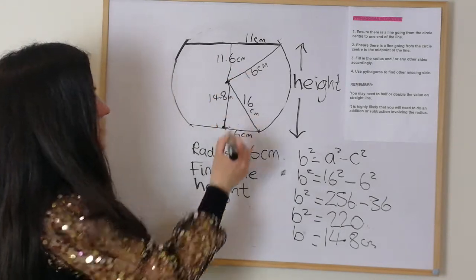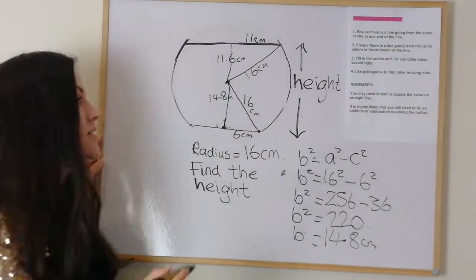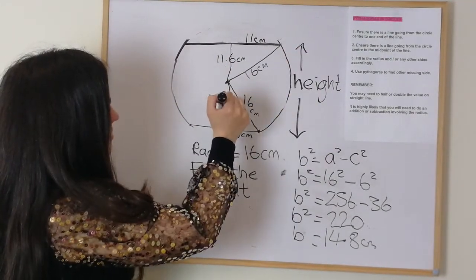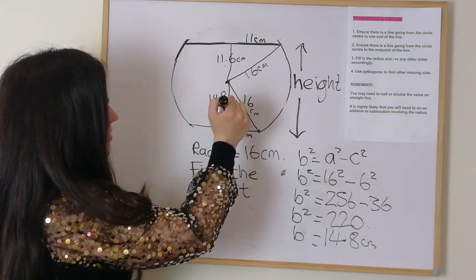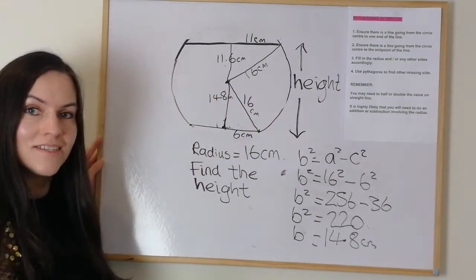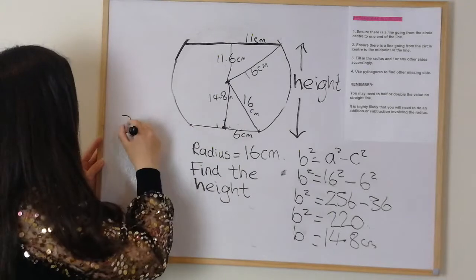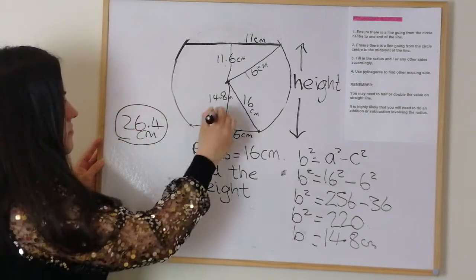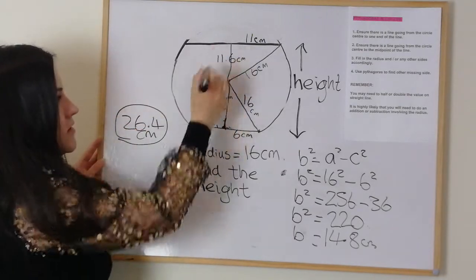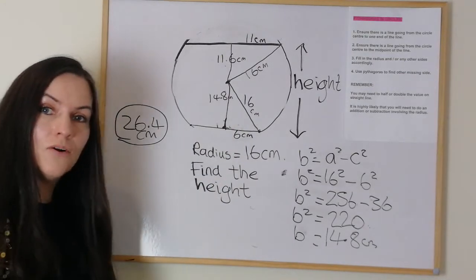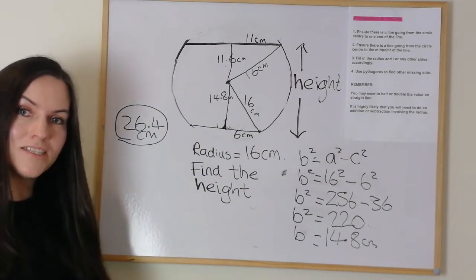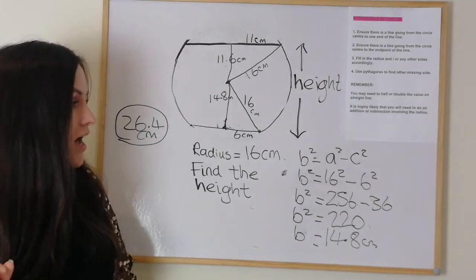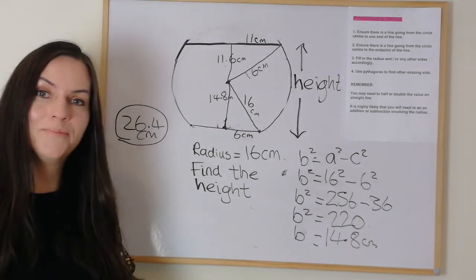So if we want the entire height, we add those two values together: 11.6 + 14.8 = 26.4 centimetres. So 26.4 centimetres is the height. I hope that's been helpful. Please like, please subscribe, feel free to ask about my National 5 group sessions, and we'll hopefully see you in the next video. Bye.